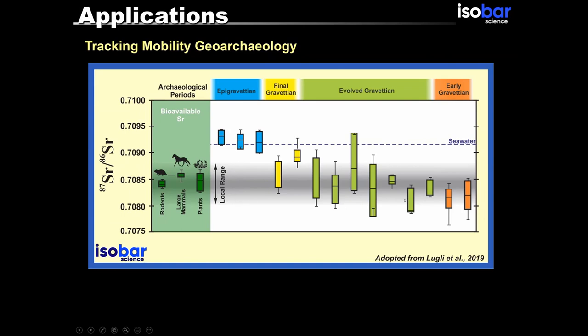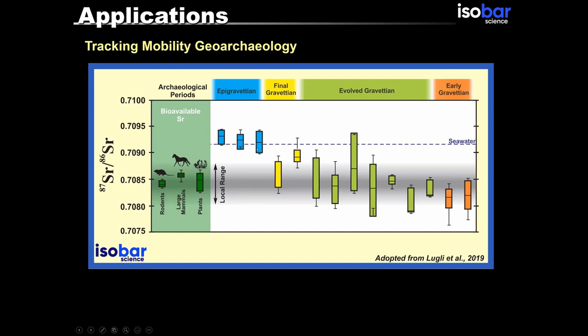Then they went ahead and started analyzing tooth enamel from different archaeological layers. They noticed that for most of the time, moving from early Gravettian to final Gravettian, most of the people are from the same region and live in the same region — they don't migrate and don't receive any visitors. But moving into the Epigravettian, there are new arrivals in the region because they are showing totally different strontium signatures.